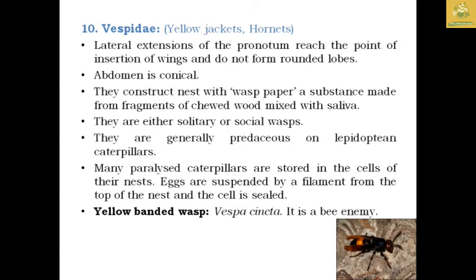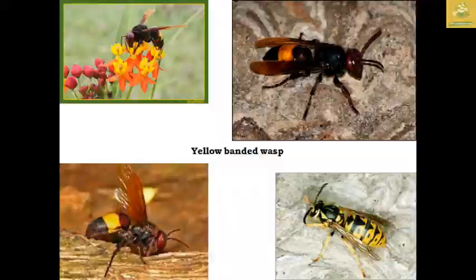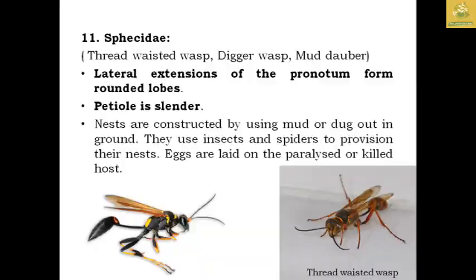The family Sphecidae includes the thread-waisted wasp, also known as the digger wasp. The lateral extension of the pronotum forms a round lobe, the petiole is slender, and nests are constructed using mud or dug out in the ground. These insects use paralyzed insects and spiders to provision their nests.